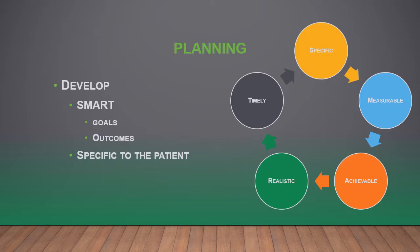Goals have to be realistic — don't write that a little old lady who takes sips of water once an hour is going to drink four liters of water today. Think about whether it's something you can actually accomplish in the time frame you're looking at. Goals also need to be timely, meaning you assign a time to them so you know when the goal needs to be reassessed. If you leave things open-ended, you don't know how fast you're working towards the goal and it becomes very hard to measure.